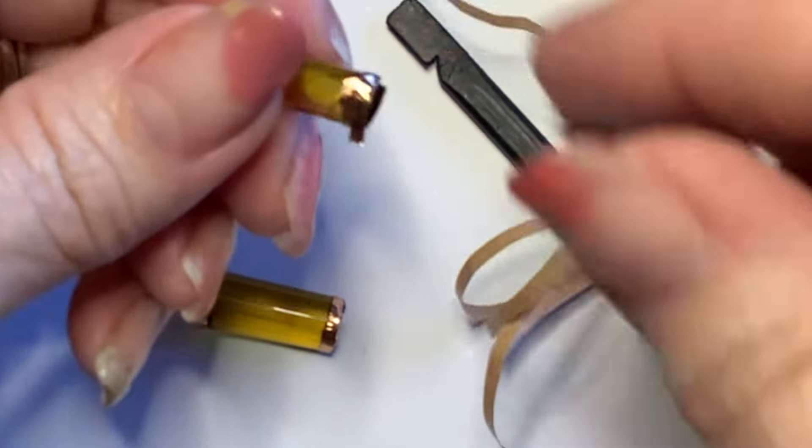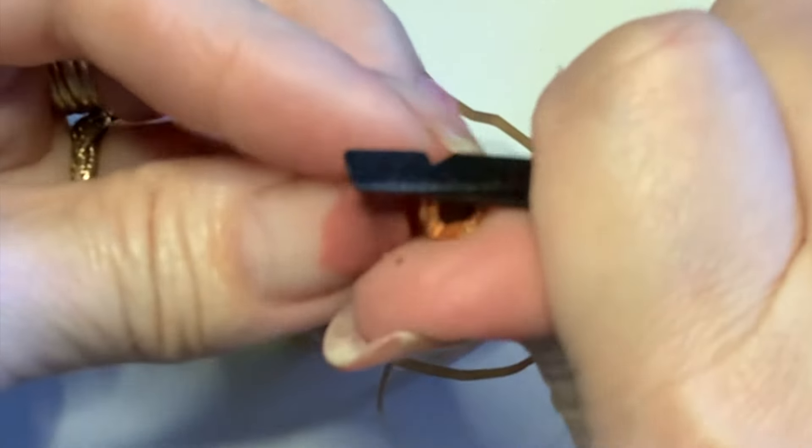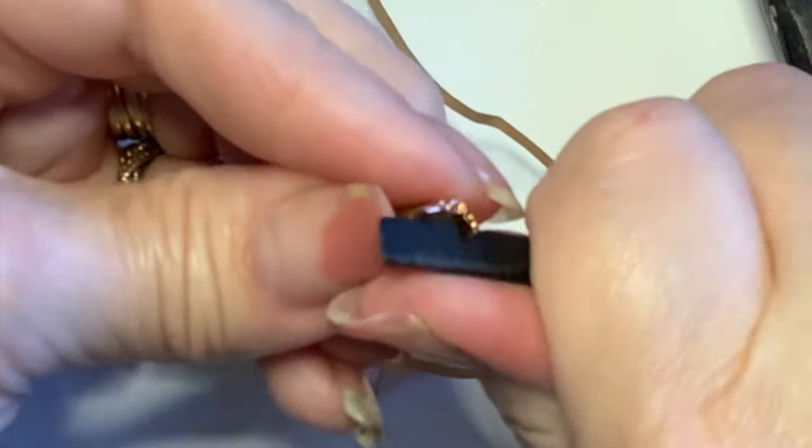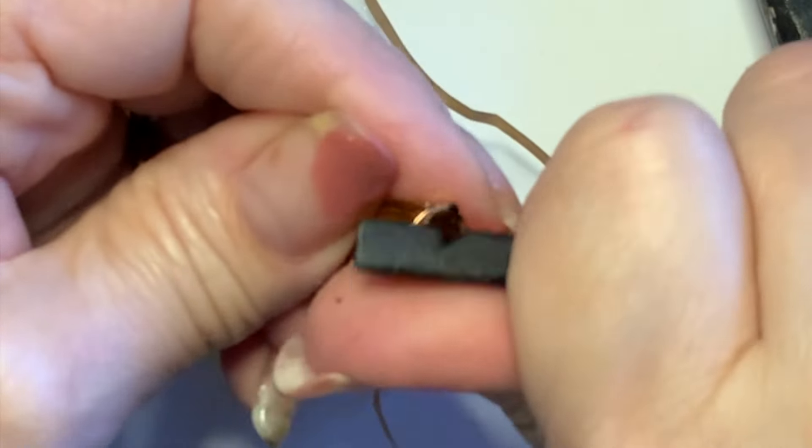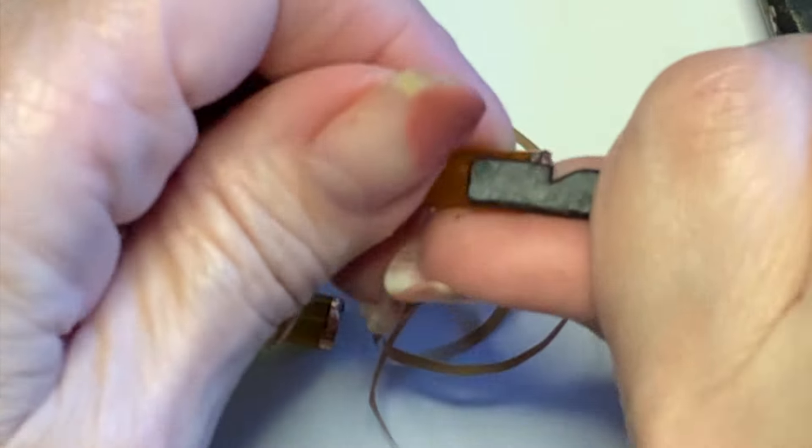After you're done foiling them, you're going to want to push down the foil just like you would if you were doing stained glass work. You want to make sure that the foil is actually sticking to your project because that's what's going to help hold it together when it's done.